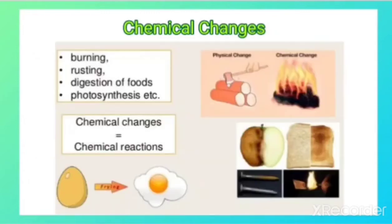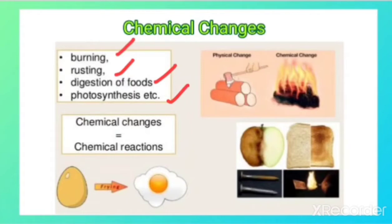Examples of chemical changes that we observe in our day-to-day life include processes like burning, rusting, digestion of food, and photosynthesis. All these are chemical changes because during these processes a new substance is formed. A chemical change can also be called a chemical reaction.